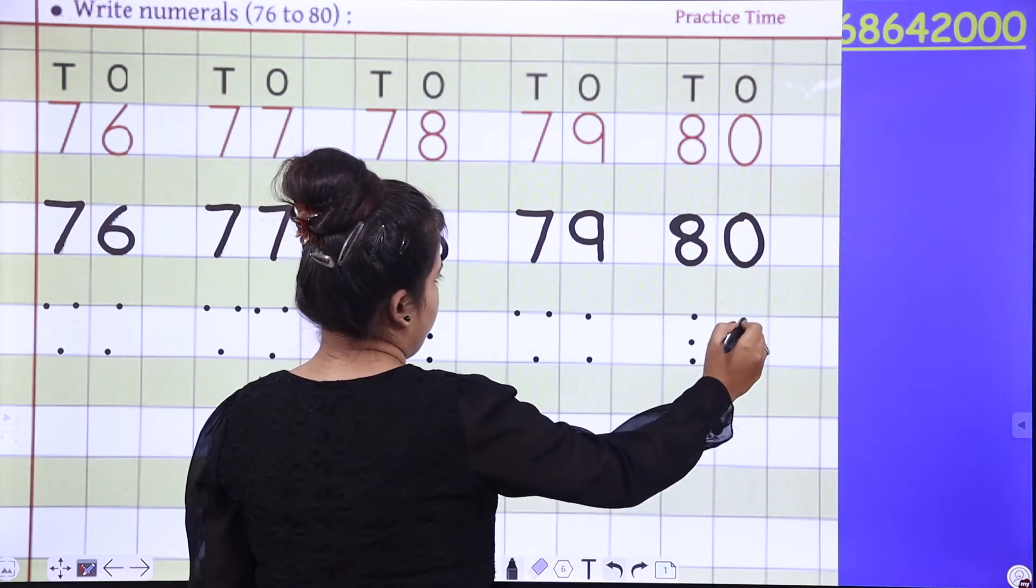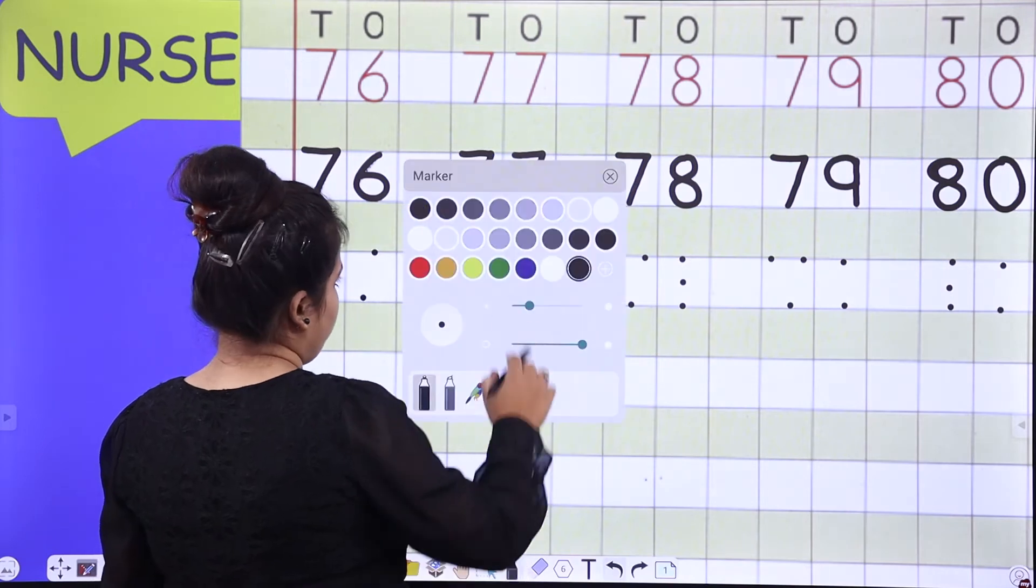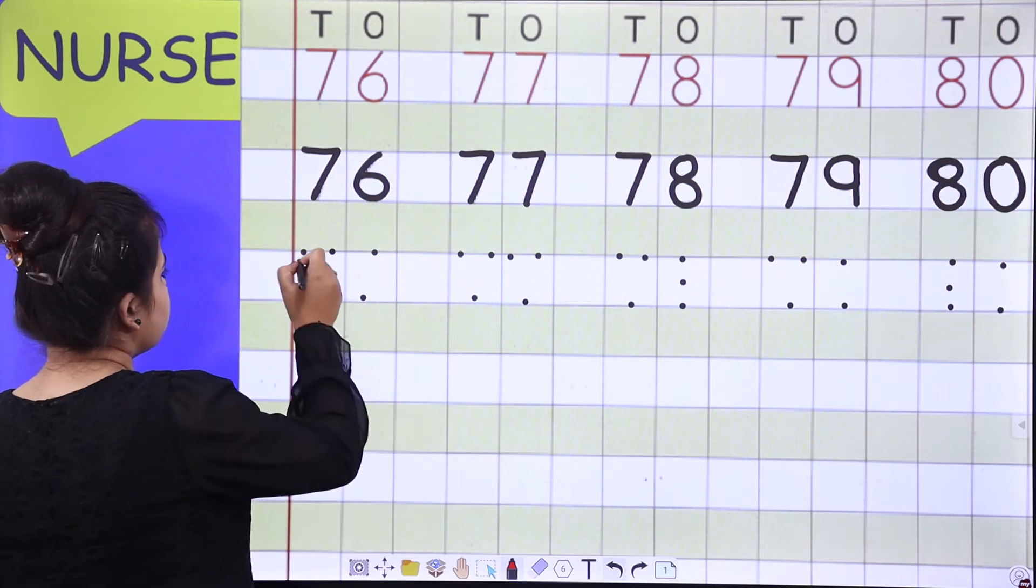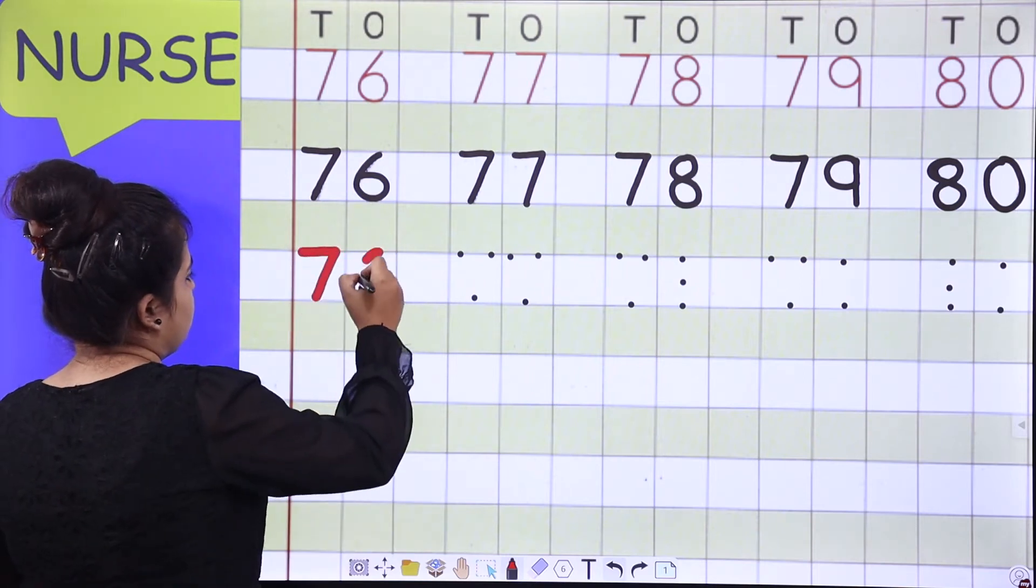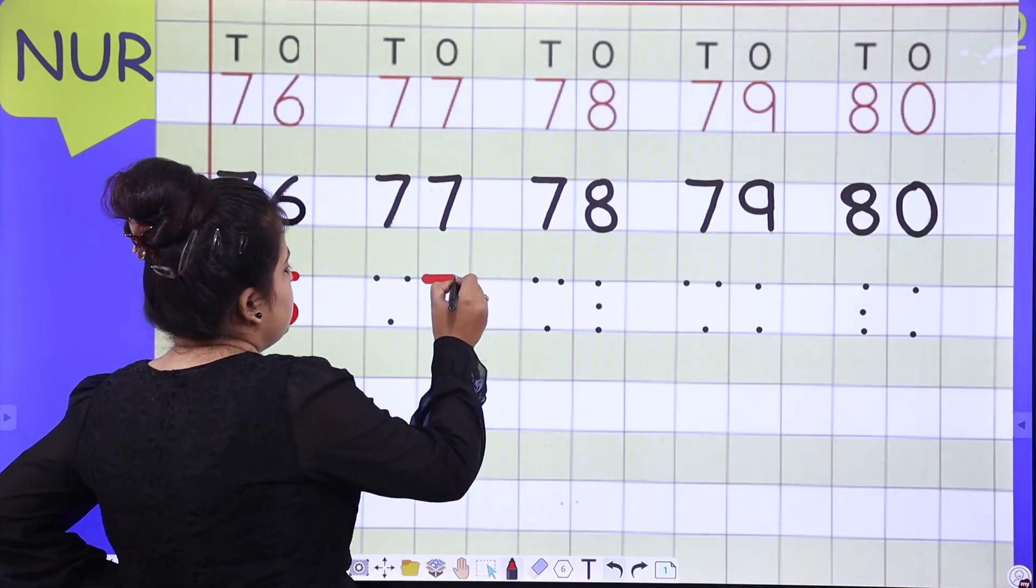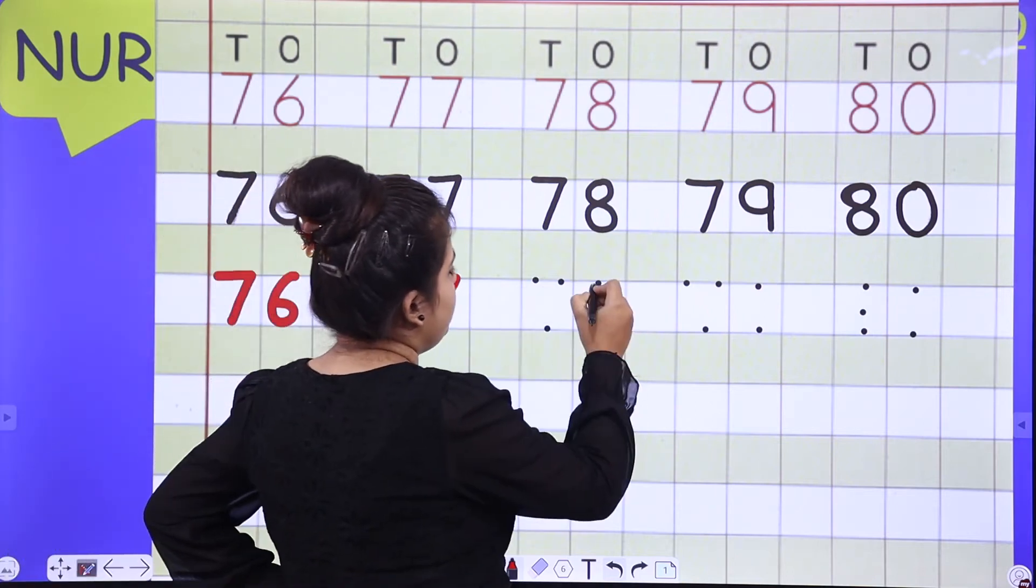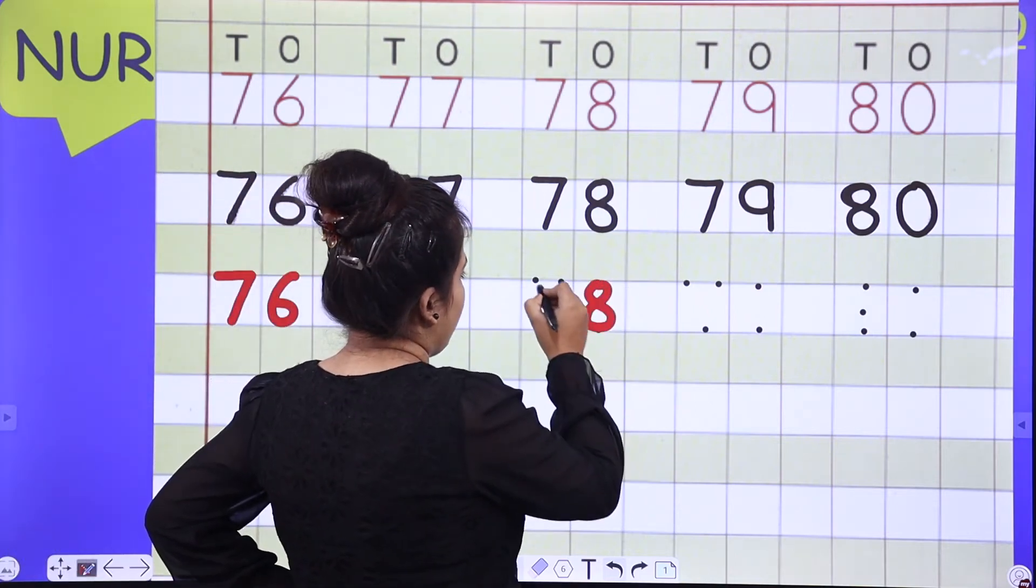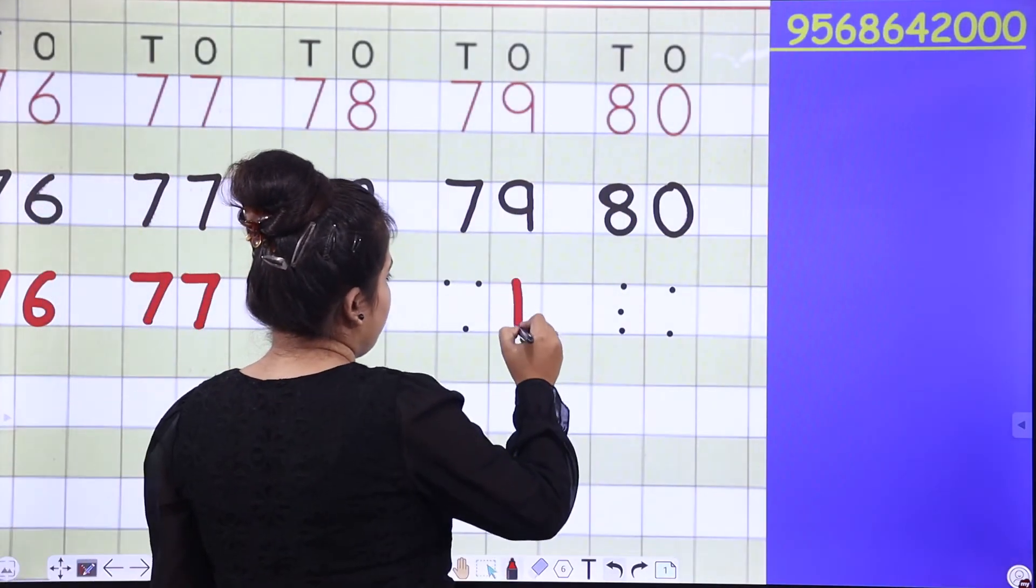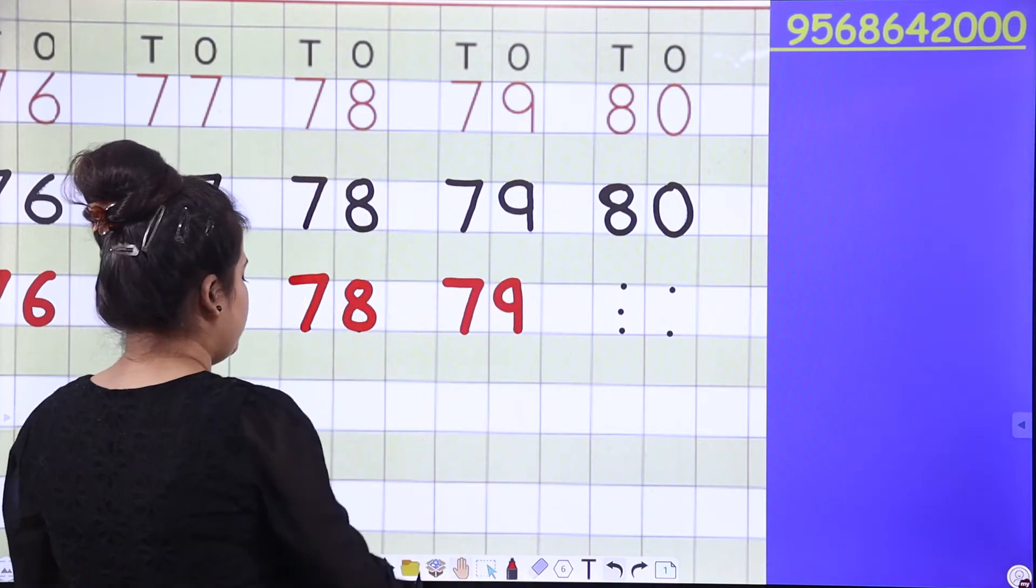80, 80. Okay, so let's start from this to this. First number is after 75, which number is 76? 76, 76, 76. 7 and 7 is the constant number. After 7, 8. And 7 is the constant, that is 78, 78.